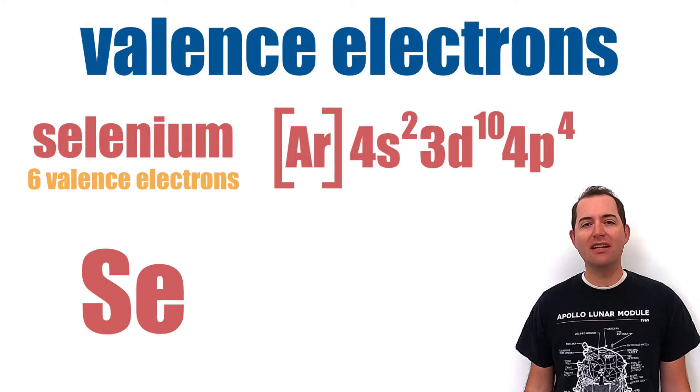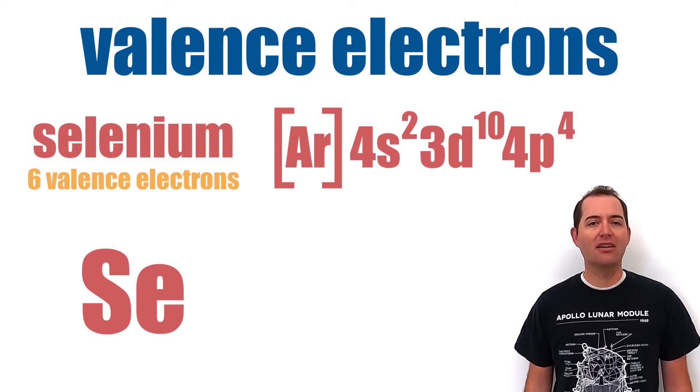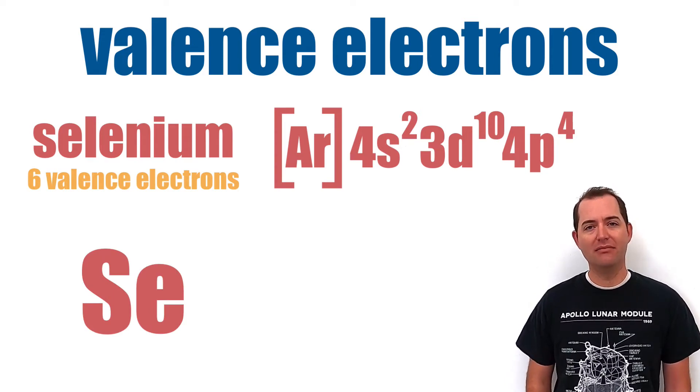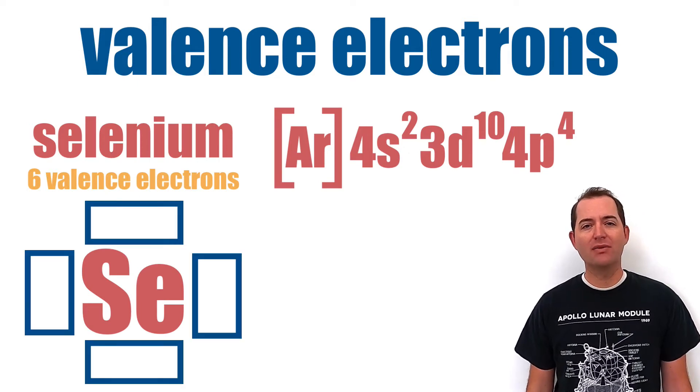Next, those six valence electrons need to be placed as dots around the symbol for selenium. Generally, there are four points where valence electrons are placed around an element symbol.